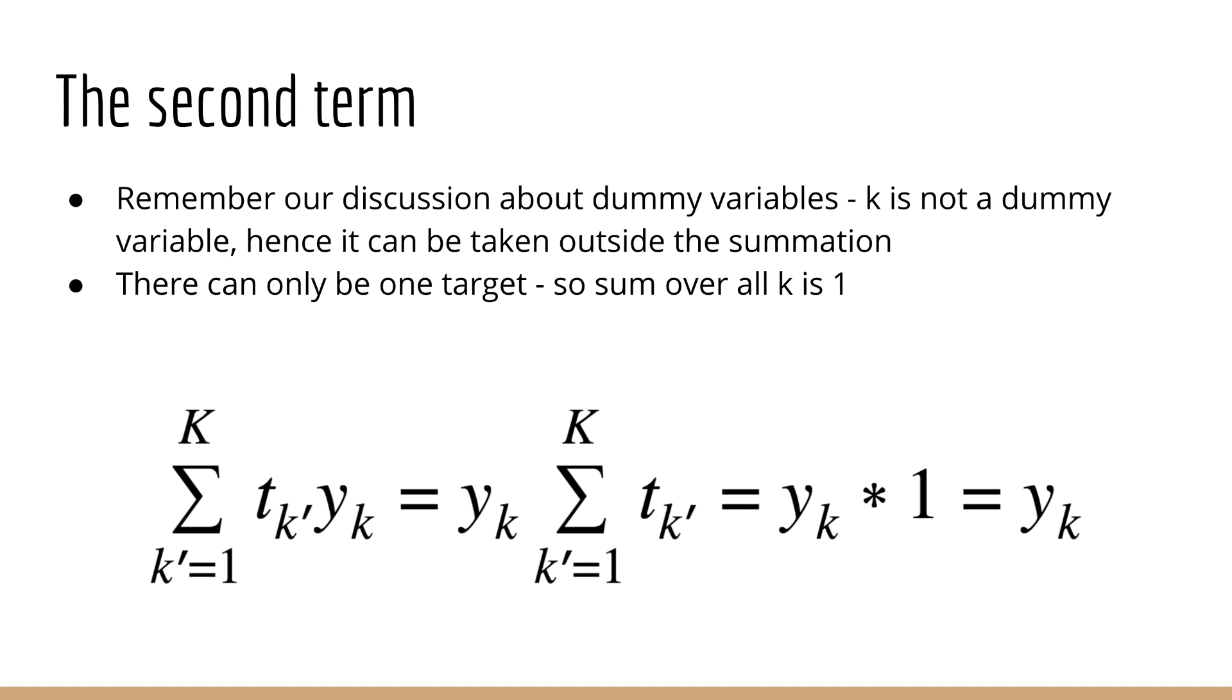The next step is to realize that t represents a neural network target. Only one of the values is 1, and the rest are 0. Of course, in this scenario, it doesn't matter which one is 1, since we're just summing them together. And of course, 1 plus a bunch of zeros is still equal to 1. Therefore, this summation is just equal to y of k.